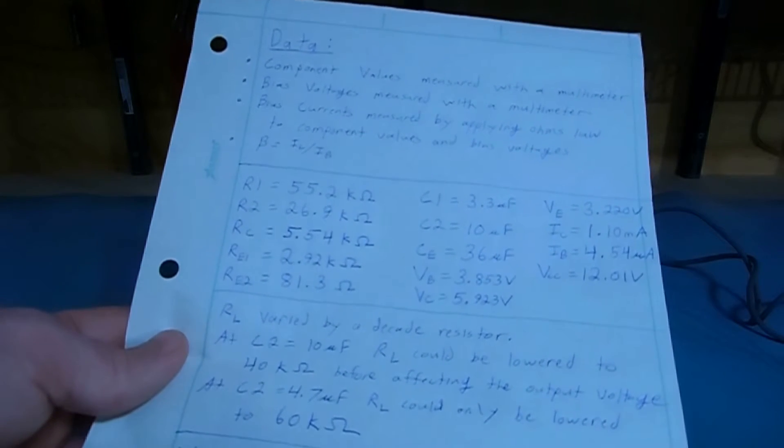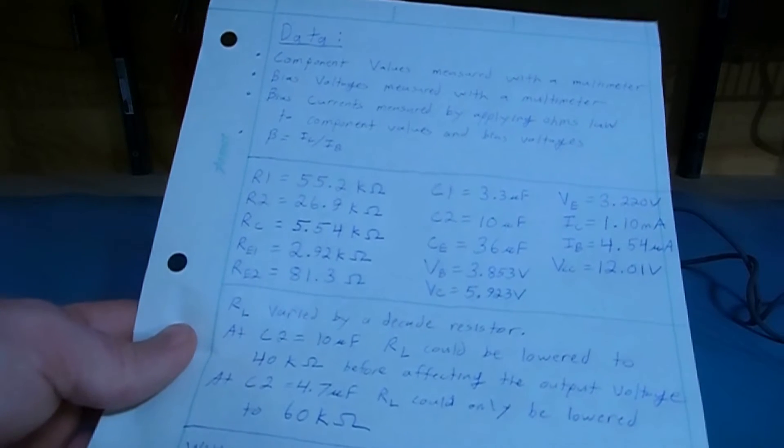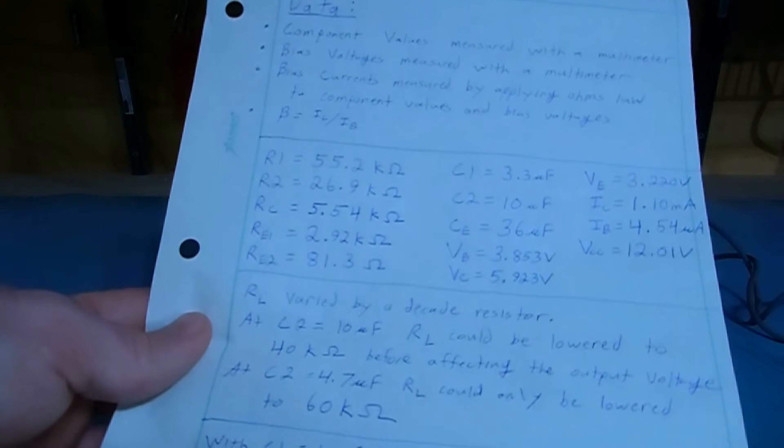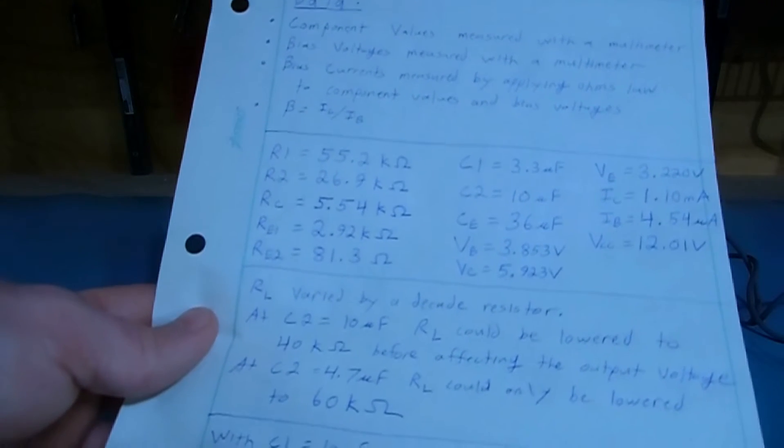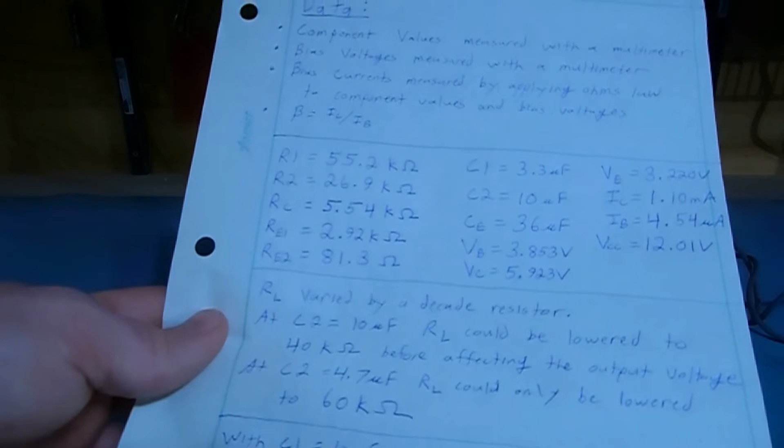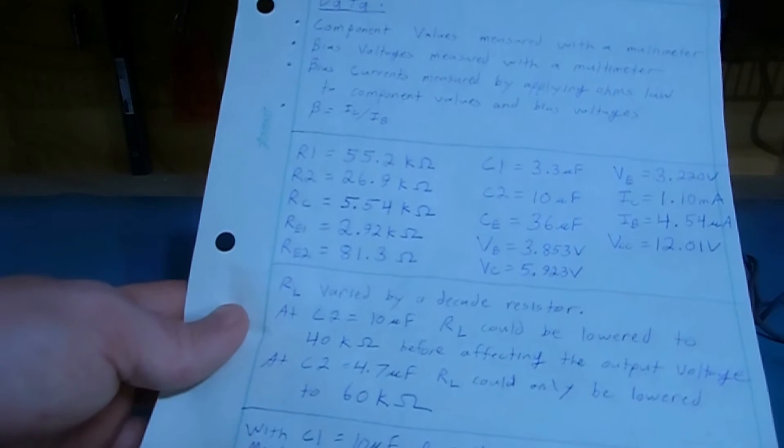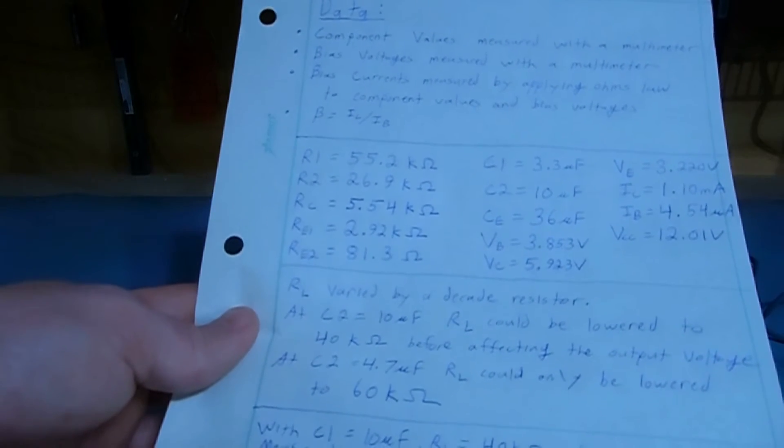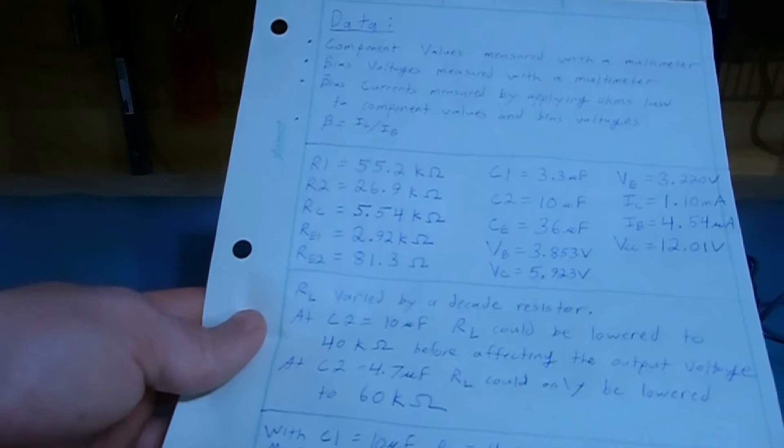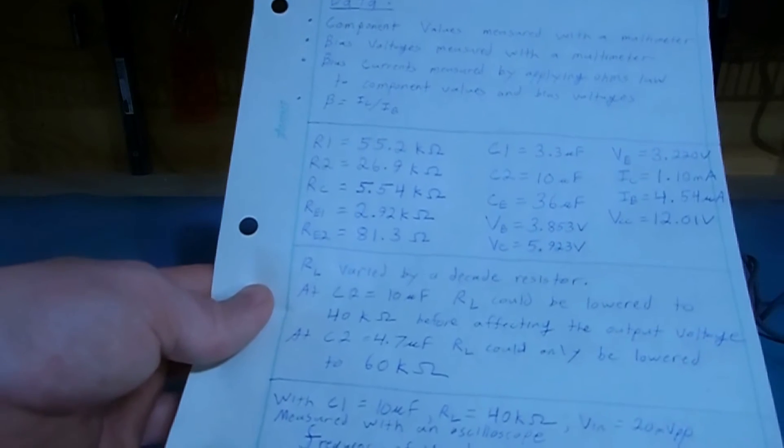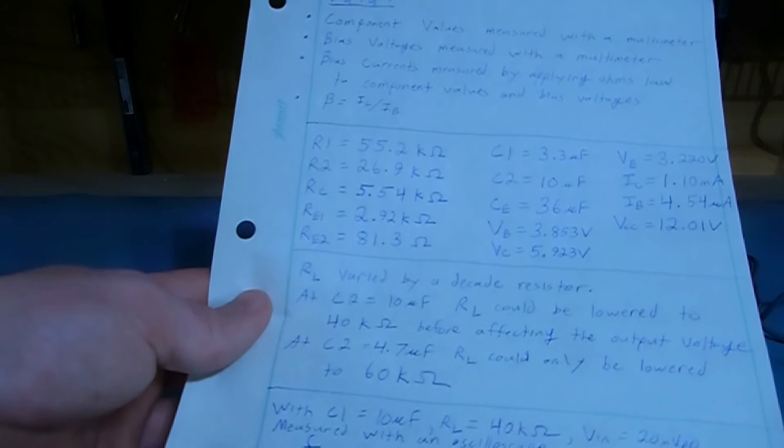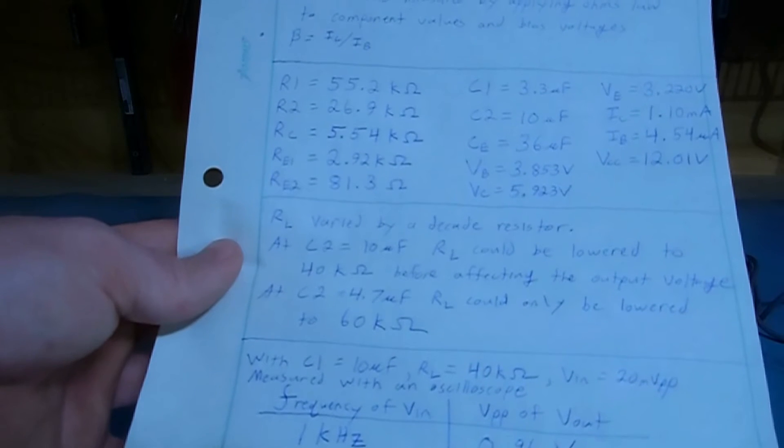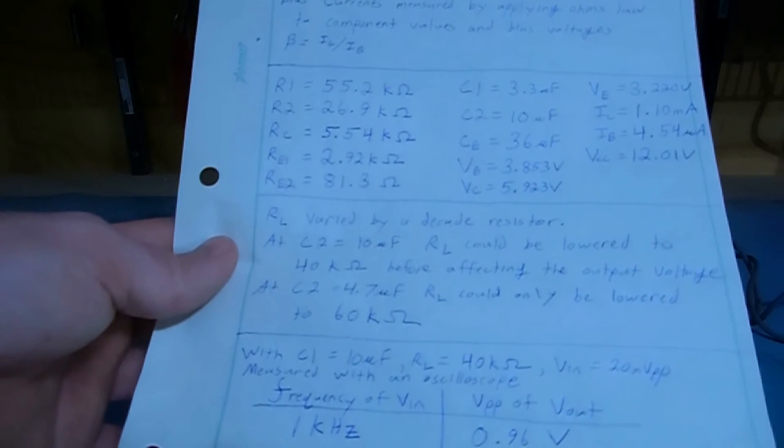So using our output capacitor of 10 microfarads, I used a decade resistor as the load and was able to drive up to a 40,000 ohm resistor before affecting the output amplitude. Meaning that if I drop the resistance below 40,000 ohms, it starts to drop the amplitude of the output signal. And just for experimentation sake, I switched the output capacitor to 4.7 microfarads, and the output impedance was only able to be 60,000 ohms.